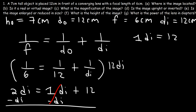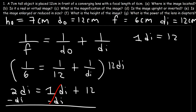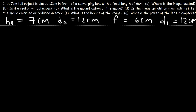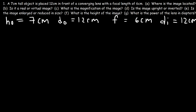Do we have a real or a virtual image? Because DI is equal to a positive number, the image is real. If DI were negative, the image would be virtual. So we have a real image.